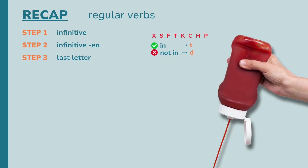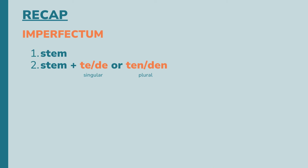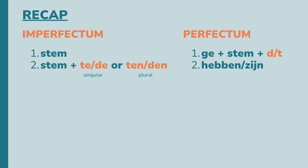Let's do a quick recap. For regular verbs, you use the ex soft ketchup rule: 1. Take the infinitive. 2. Remove the -en. 3. See if the last letter is part of ex soft ketchup — if yes, work with the t; if not, work with the d. 4. To form the imperfectum, take the stem plus -te/-de or -ten/-den when plural. 5. To form the perfectum, take the conjugated form of 'hebben' or 'zijn' plus ge + stem + t or d.